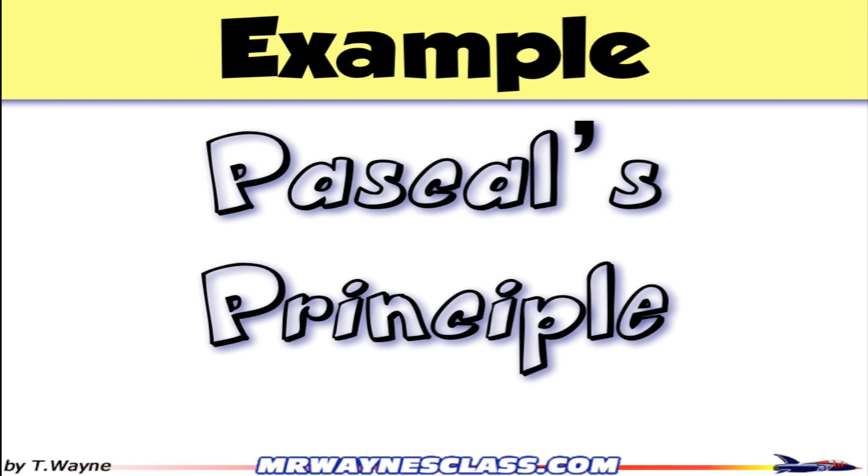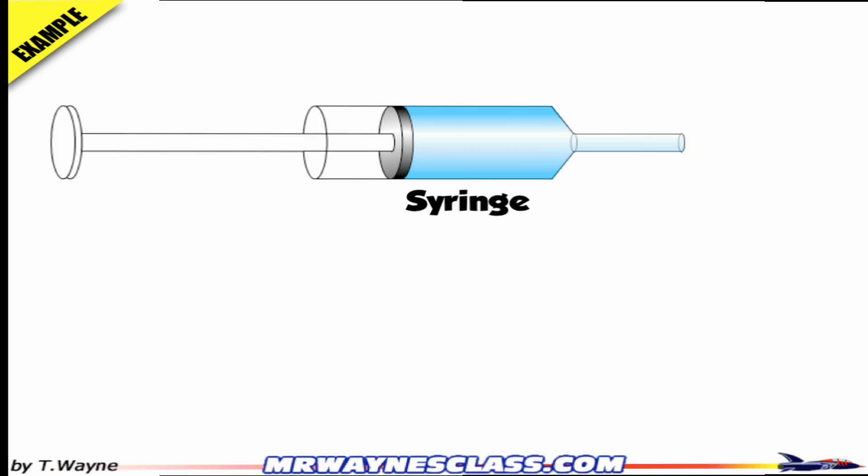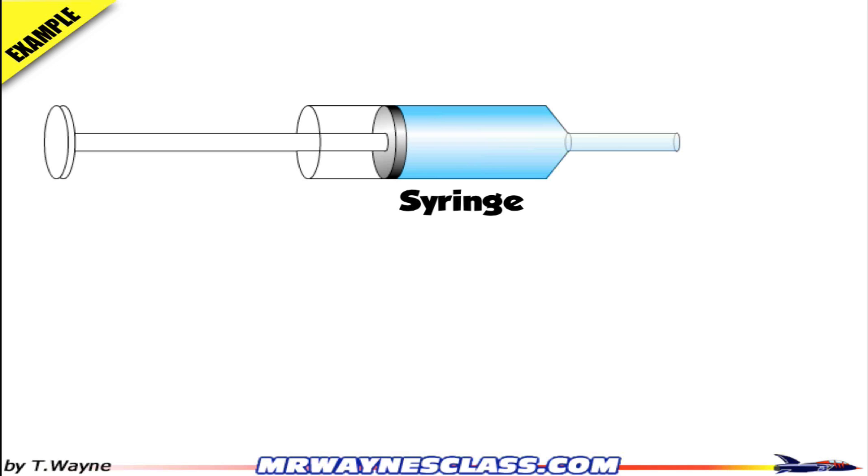This is an example problem using Pascal's principle. We'll start with a syringe, which has two different areas on the two ends - one by the plunger and one by the opening on the right of this picture.